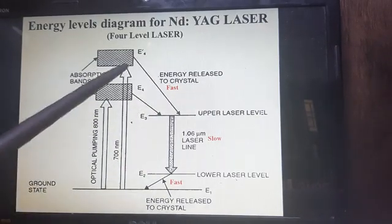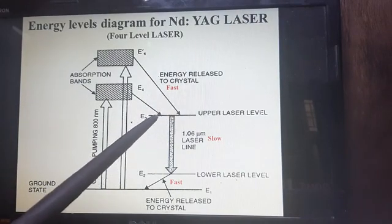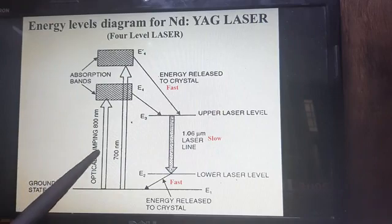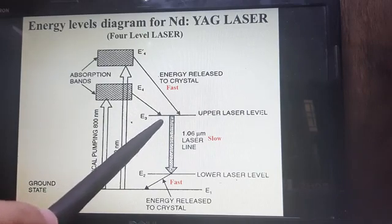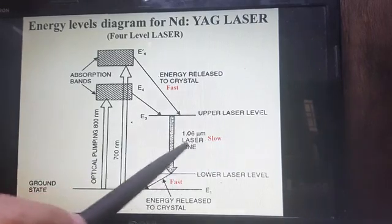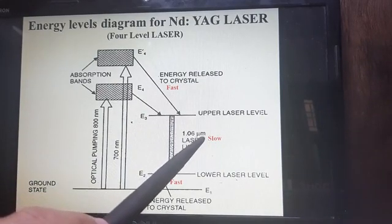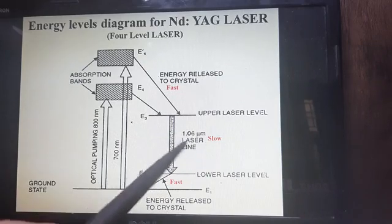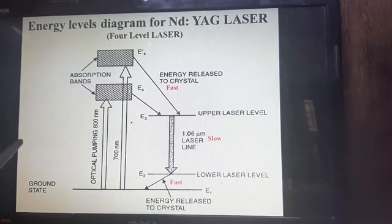The Nd³⁺ ions automatically accumulate in the E3 state, so the number of ions in E3 becomes greater than in the ground state E1 or lower level E2. This condition is called population inversion, which is required for laser action. By stimulation, extra energy is supplied to these ions for the transition from E3 to E2. The laser light produced has a wavelength of 1.064 micrometers or 1064 nanometers. This is the laser transition region.